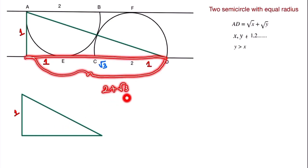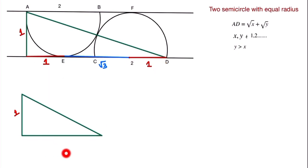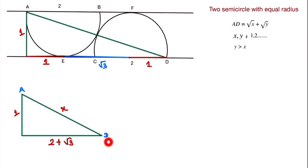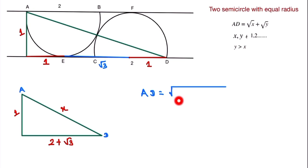The total horizontal length of the triangle is 2 + √3, and the vertical side is 1. Let's suppose the length AD is x, so AD = x. We find the length of AD using the Pythagorean theorem: AD = √(1² + (2 + √3)²).